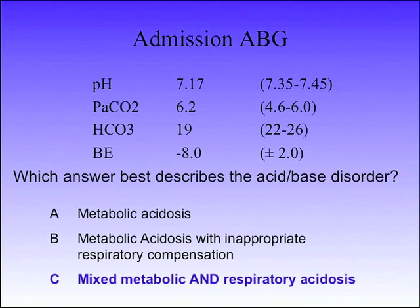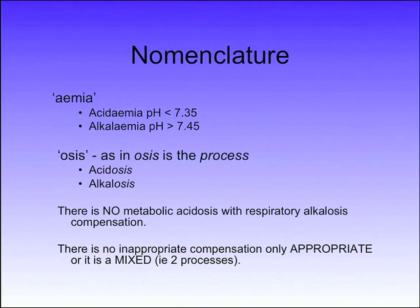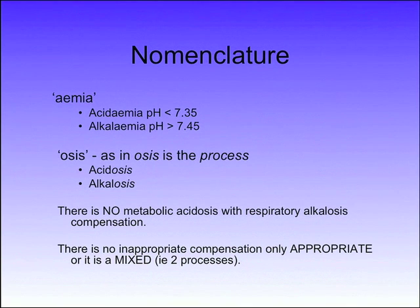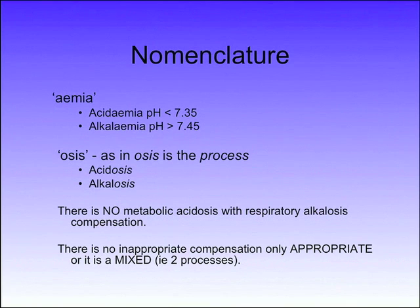To understand blood gases, you've got to get your nomenclature right. Try to save the word '-osis' for the process and use the word '-emia' for the pH. Because that means when you use '-osis' as the process, you're thinking pathology.